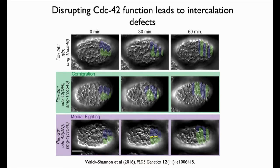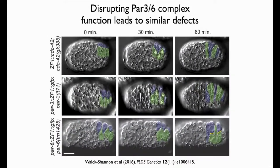CDC42 is known to interact with the PAR complex — a protein complex originally discovered in worms. If you perturb PAR complex components, you get very similar phenotypes. Perturbing PAR-3 or PAR-6 gives defects that look like CDC42-dependent defects.